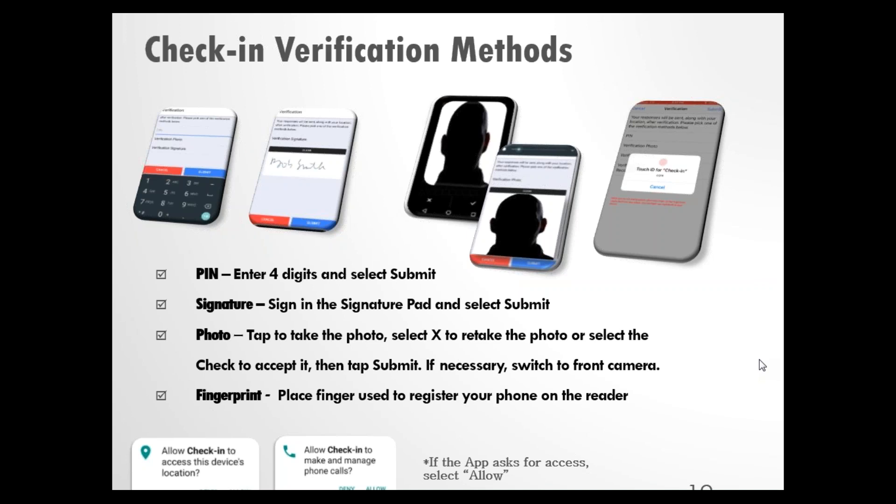If required by your agency, the app will submit one GPS point when you submit your questionnaire — that's the only time the app will take a GPS point. This app is not a GPS tracking device. There are prompts that ask for access to device location, files, or photos, but the app does not access any of your personal information. These permissions are simply needed for questionnaire submission and for links in the Help section to work within the app.